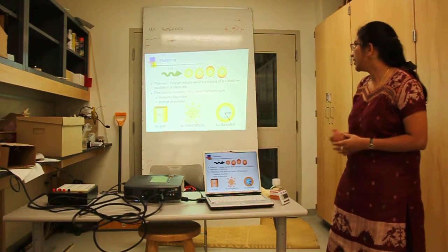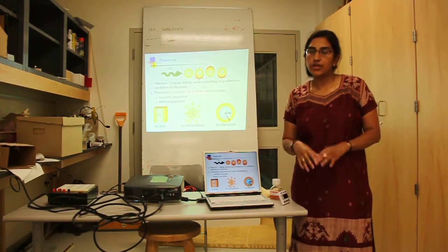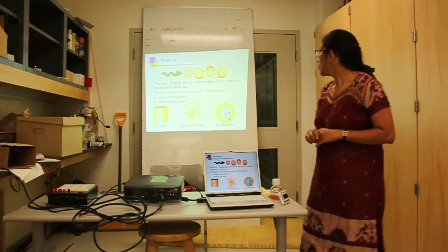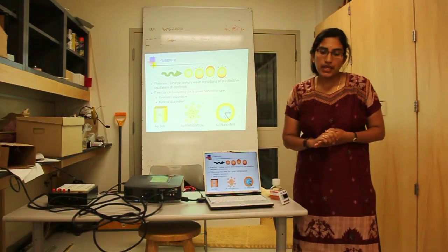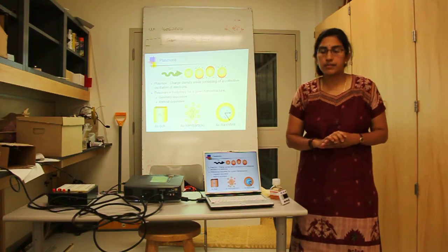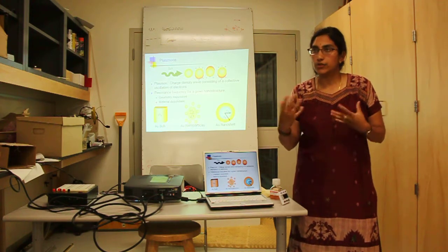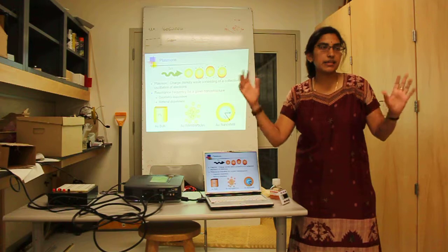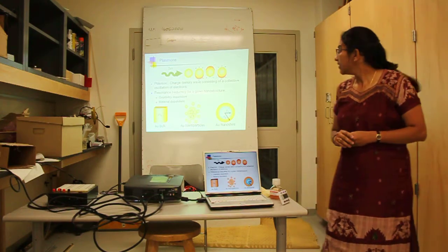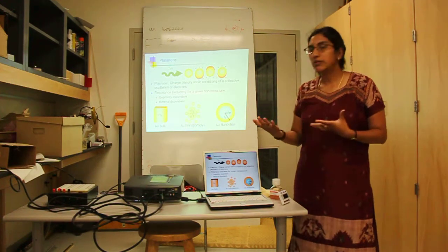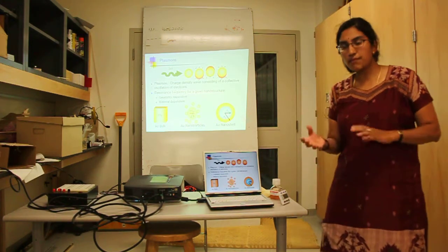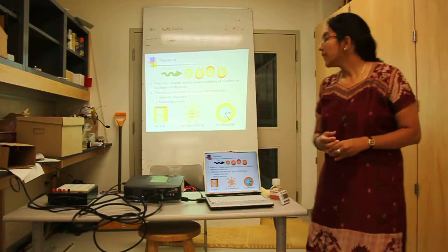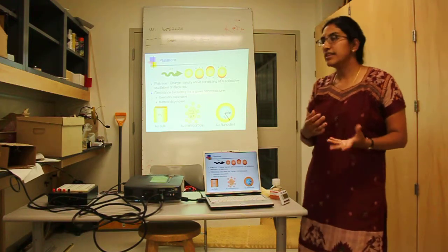So, what is a plasmon? A plasmon basically is a charge density wave, which is a collective oscillation of electrons. And it's generally observed in metals, which are like Drude metals, which have a free sea of electrons. And this collective oscillation gives rise to an optical resonance. And the optical resonance is both dependent on what the shape of the nanoparticle is, as well as on what material it is made of.